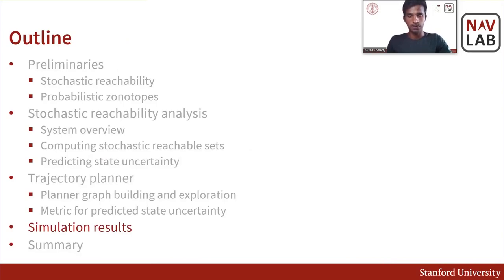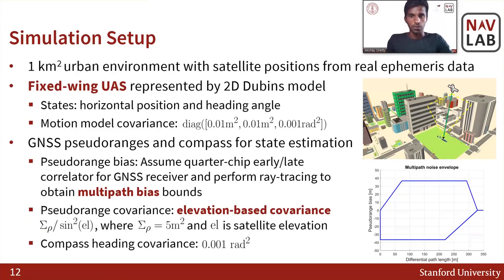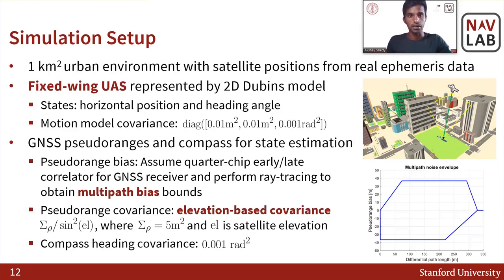For the simulations, we consider a 1 km² urban environment with satellite positions obtained from real ephemeris data. For the motion model, we consider a fixed-wing UAS represented by a 2D Dubins vehicle, where the states are the horizontal position and the heading angle. For the measurements, we use GNSS pseudo-ranges and compass heading measurements for state estimation. For the pseudo-range bias, we assume the GNSS receiver has a quarter-chip early-late correlator spacing and perform ray tracing in the environment to obtain multipath bias bounds. The ray tracing gives us the differential path lengths at each point in the environment, which helps obtain the pseudo-range biases for multipath. For the stochastic uncertainty, we consider an elevation-based covariance.